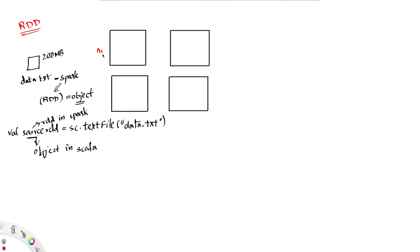Let us assume that these are the four nodes in our Hadoop Distributed File System: N1, N2, N3, and N4. The default block size in HDFS is 128 MB, and the data file we have is 200 MB. So this data file, when stored in HDFS, will be split into blocks of 128 MB — one block of 128 MB and the remaining 72 MB stored in a second block.